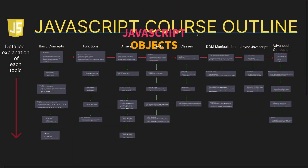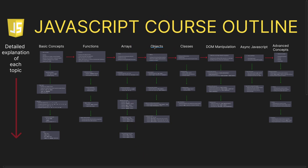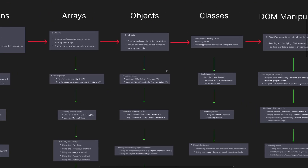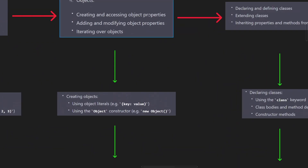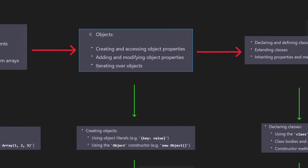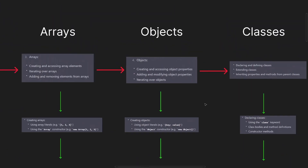This is a JavaScript course outline generated using ChatGPT. In this video, we're going to talk about objects. If you want to find out about basic concepts, functions, or arrays, I have made videos about them — I'll put the link in the description. We're going to be looking at creating and accessing object properties, adding and modifying object properties, and iterating over objects.